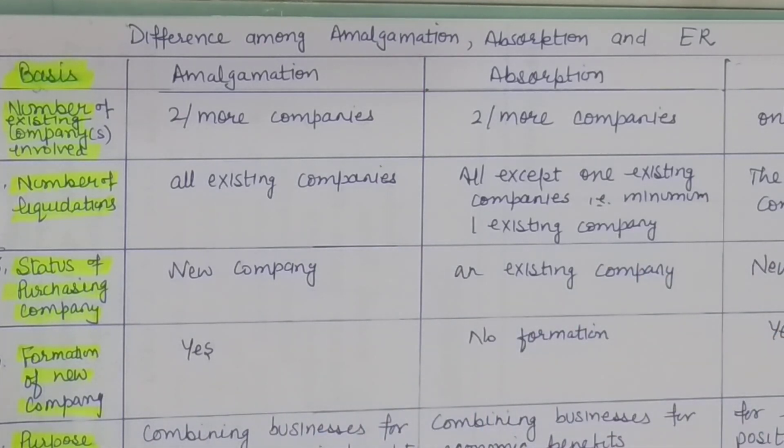This is how we distinguish between these terms. The practical accounting — closing books of vendor companies and recording purchase of business with a balance sheet for the purchasing company — is common across all three cases. Next time we will be taking up technical terms. Thank you.